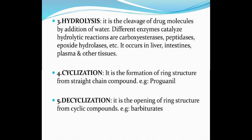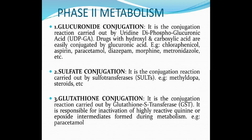Third, hydrolysis — it is the cleavage of drug molecules by addition of water. Different enzymes catalyze hydrolytic reactions, including carboxylesterase, peptidase, and epoxide hydrolase. It occurs in the liver, intestine, plasma, and other tissues. Fourth, cyclization — the formation of ring structure from a straight-chain compound, for example proguanil. Last, de-cyclization — the opening of ring structure from a cyclic compound, for example barbiturates.